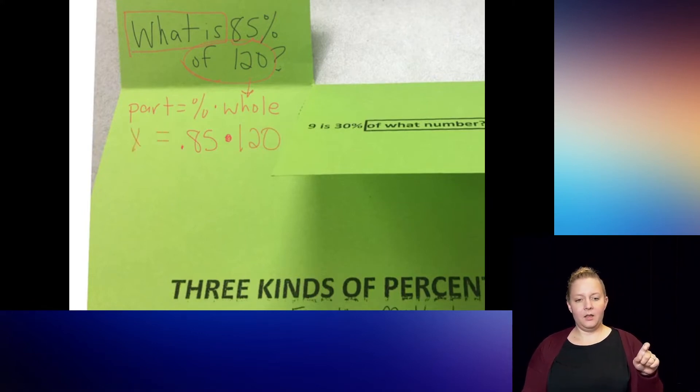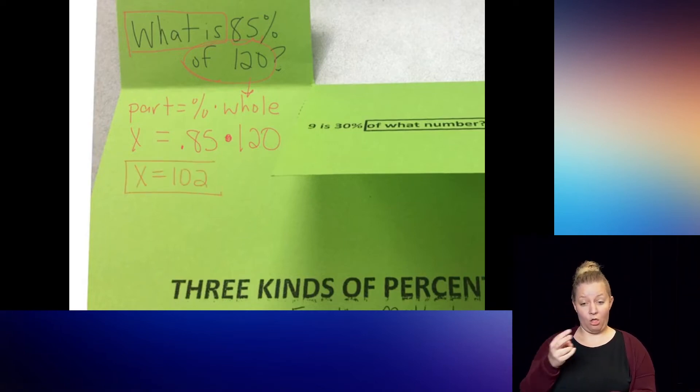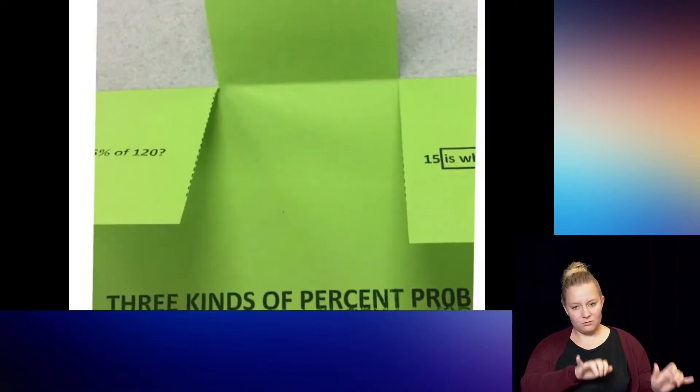I already have my variable by itself in that case. So all I have to do is type in my calculator 0.85 times 120 and get my answer. So in this case, I will say x equals 102. And if you look back at your six one notes where you did the proportion method, you'll see on this problem, you also got 102 there.